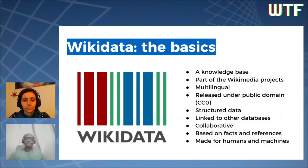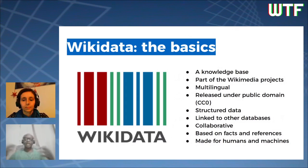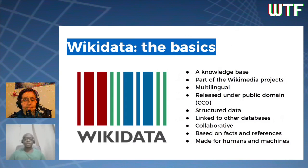Wikidata is not a primary source of information. It only aggregates or collects structured data that is already available, some of which are linked to other databases. So it is not meant to be a place for original research. Wikidata is made for humans and machines and it's available for everyone's use, whether on other Wikimedia projects or outside of it.